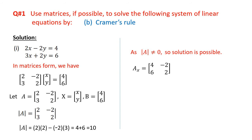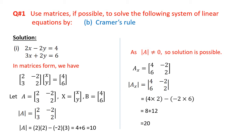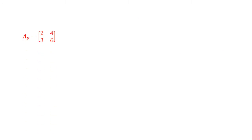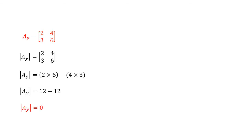Now we will find matrix A_X. To find matrix A_X, we will change the first column of matrix A by the matrix of constants, that is 4, 6. We find its determinant by multiplying diagonal entries and subtracting: 8 plus 12 equal to 20. Now we will find matrix A_Y by changing the second column of matrix A by the entries of the constant matrix. Finding the determinant: 12 minus 12, which equals 0.